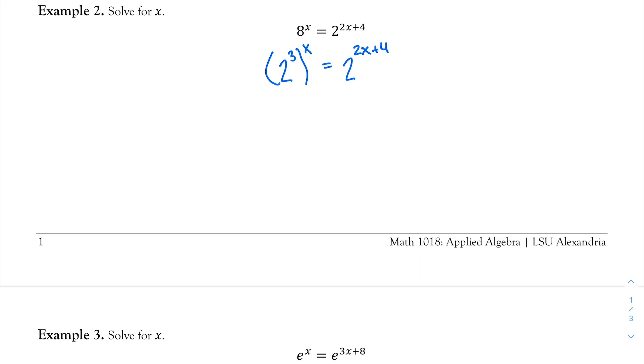So on the left, 2 cubed to the x power, when I have an exponent all to an exponent power, I just go ahead and multiply them together. In other words, 2 cubed to the x power gives me 3x as my new power, and on the right I'm still the same value. Now since I have the same base, I have a base of 2 on the left, a base of 2 on the right, I can look at the exponents on the left and right and simply set them equal to each other, giving me 3x is equal to 2x plus 4. Well now all I have to do is solve for x. This is a linear equation again. I can solve for x by subtracting 2x, giving me x is equal to 4.